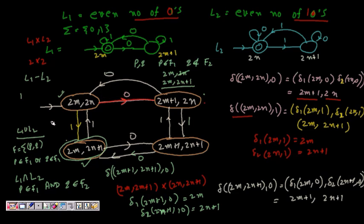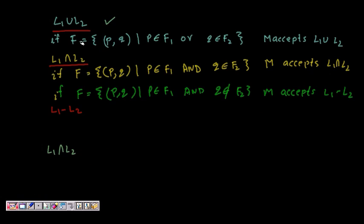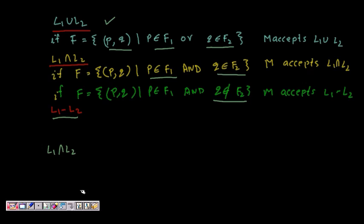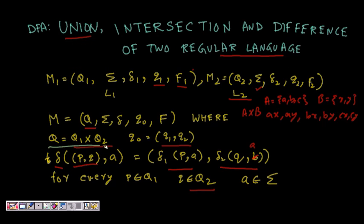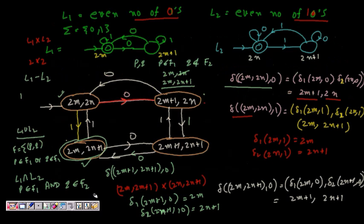In summary: to find union, intersection, or difference of two regular languages using DFA, take the cross product of states Q = Q1 cross Q2, set start state as (q1, q2), define the transition function as delta(p,q,a) = (delta1(p,a), delta2(q,a)), then select final states as follows — union: p in F1 OR q in F2; intersection: p in F1 AND q in F2; difference L1 minus L2: p in F1 AND q NOT in F2.